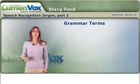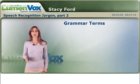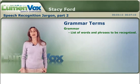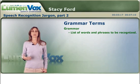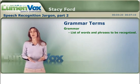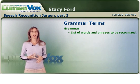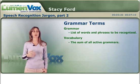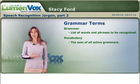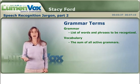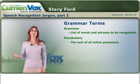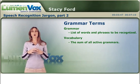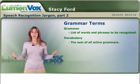Some grammar terms that are pretty speech recognition specific: a grammar is a list of words to be recognized. For example, a yes grammar might include any word that affirms your question — yes, yeah, sure, okay, yes please, or any number of affirmations. A vocabulary is the sum of all active grammars. So if the yes grammar is active, you'll probably also want a no grammar active — no, nope, no thank you. The vocabulary would be all words that can be recognized at that time across any active grammar in your application.